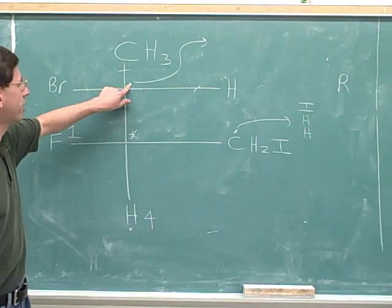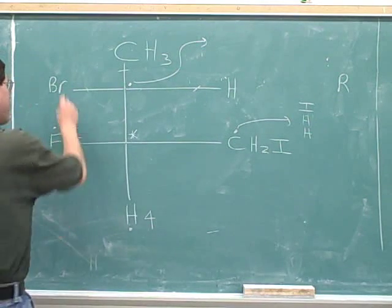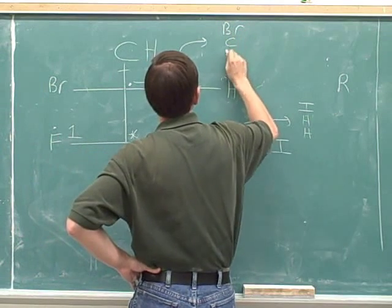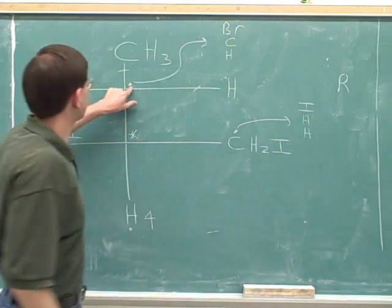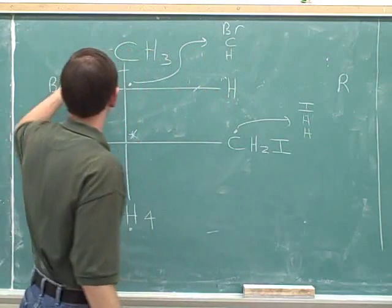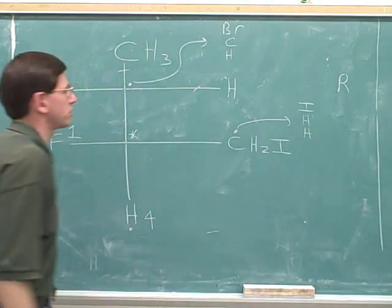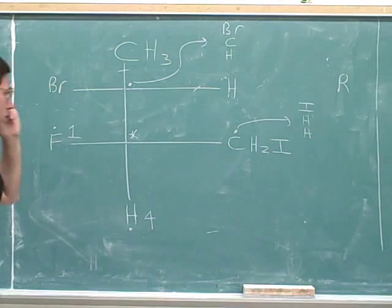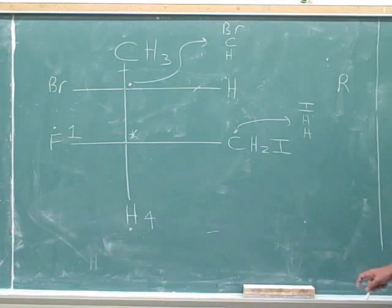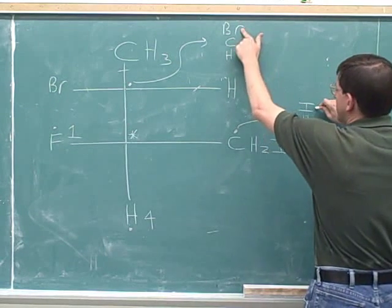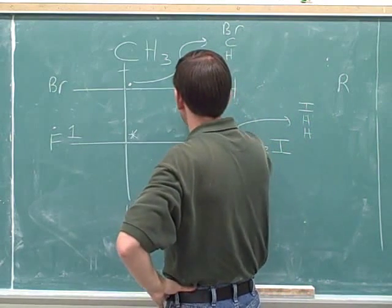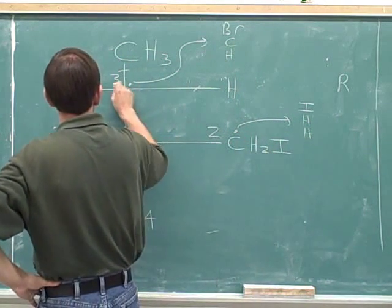What are the three atoms that this other carbon is attached to? It's attached to this bromine, this carbon, and this hydrogen. So this dotted atom is attached to bromine, carbon, hydrogen — and we write those from best to worst. The first point of difference is that the first atom in the list, iodine, beats bromine. So the iodine-bearing group is priority two and the bromine-bearing group is priority three.